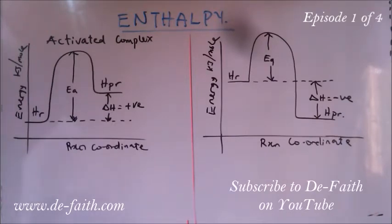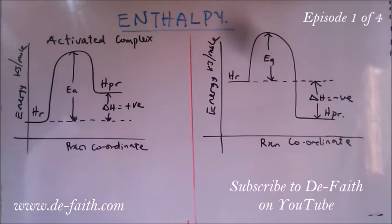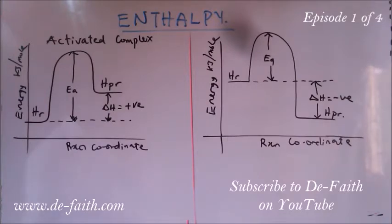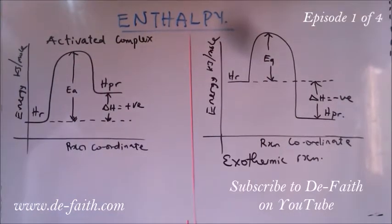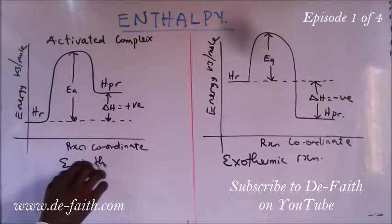First, we need to understand that during the course of any chemical reaction, energy is either given out or taken from the surrounding. Energy is given off when there is enough energy in the system to bring about the chemical reaction, or energy can be taken from the surrounding when there is not enough energy in the system. A chemical reaction in which energy is given out to the surrounding is known as an exothermic reaction, while one in which energy is absorbed from the surrounding is known as an endothermic reaction.